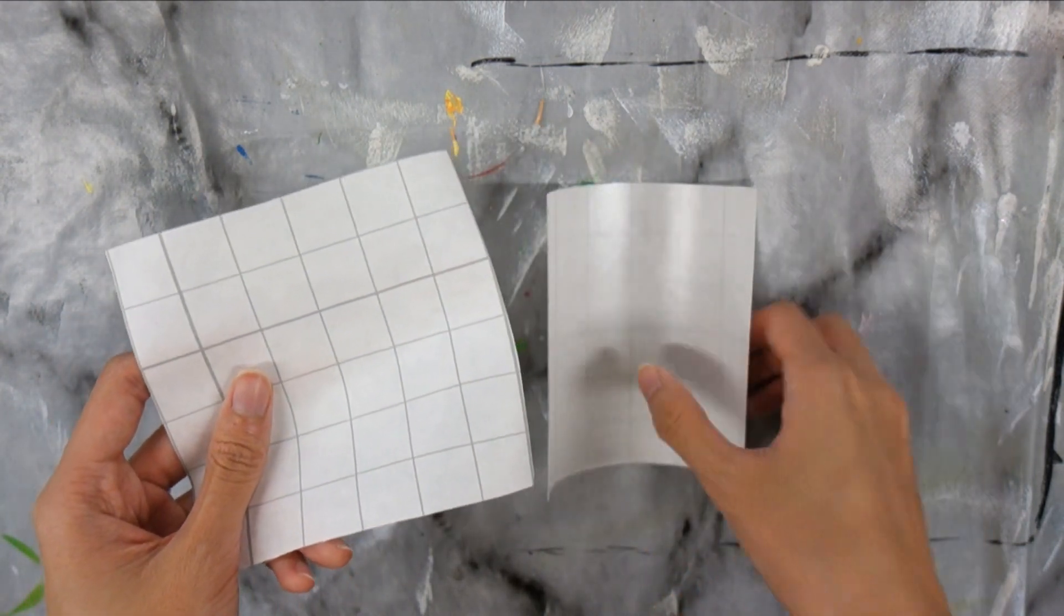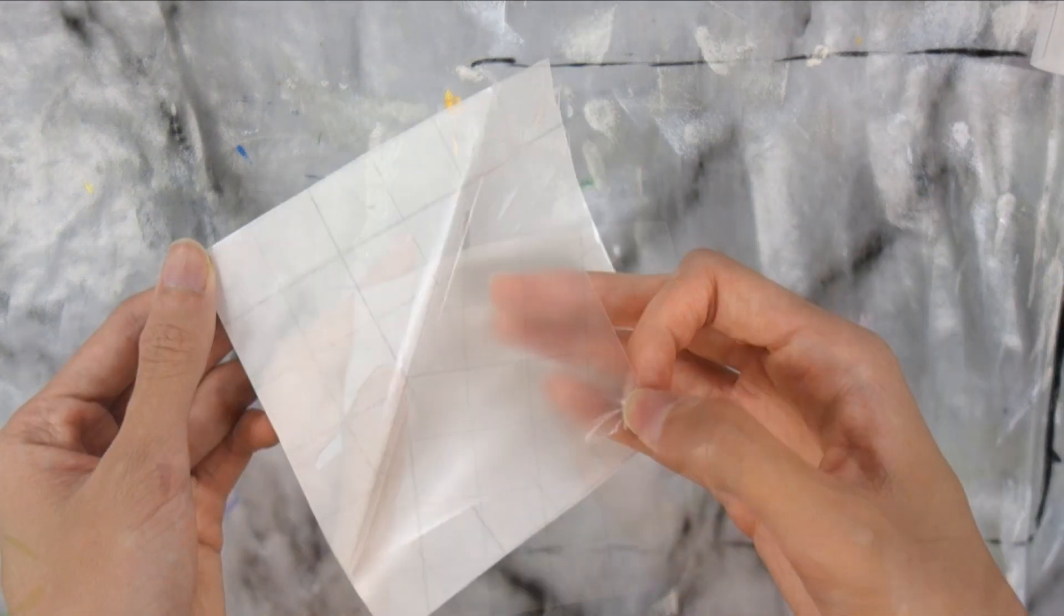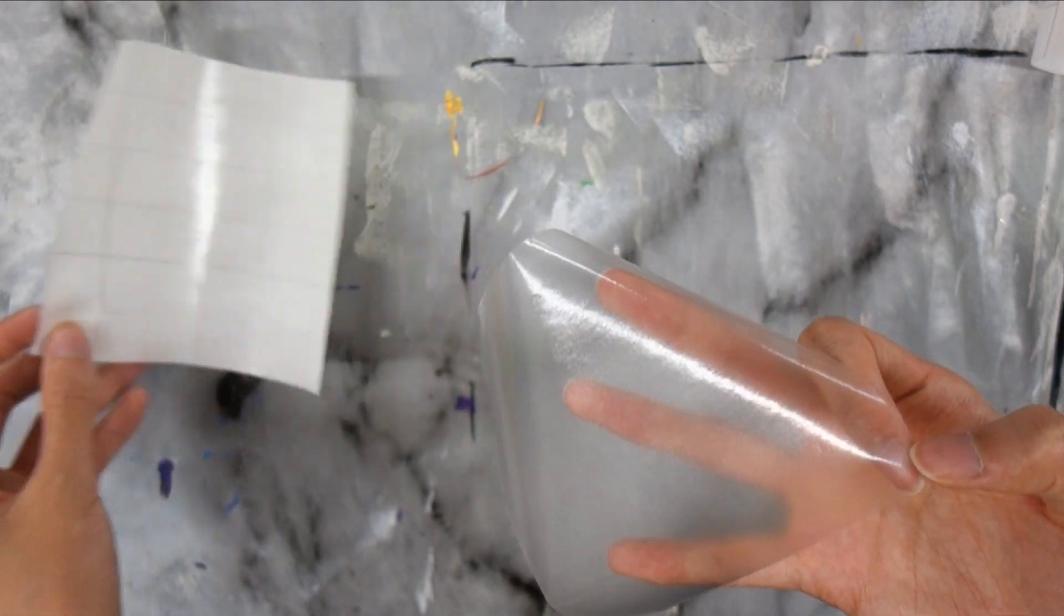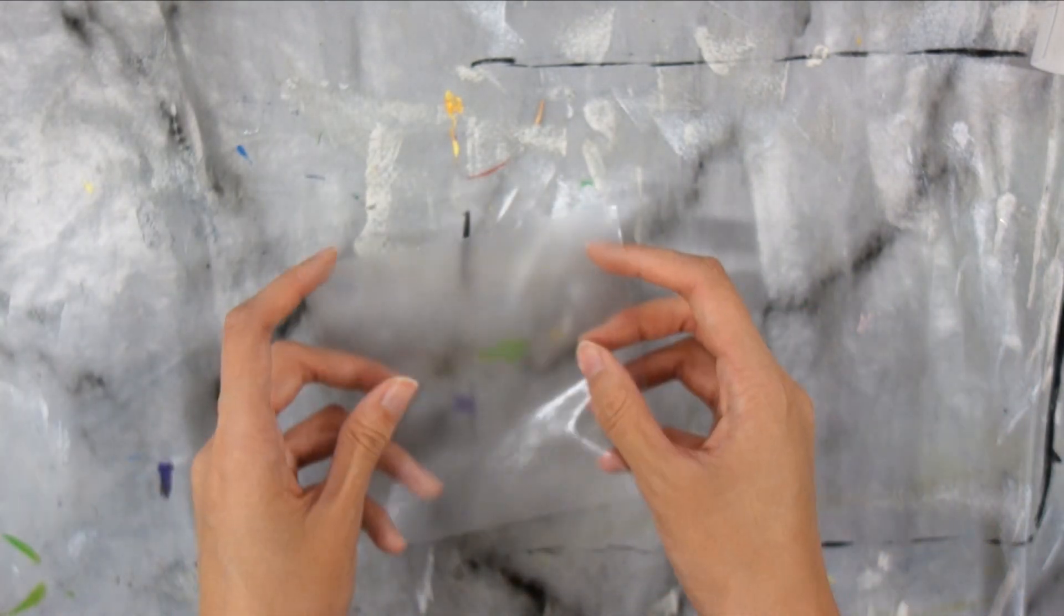First peel off the protective backing off of one contact paper square. Then place it sticky side up onto your table.